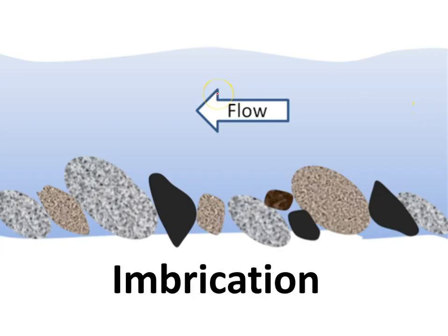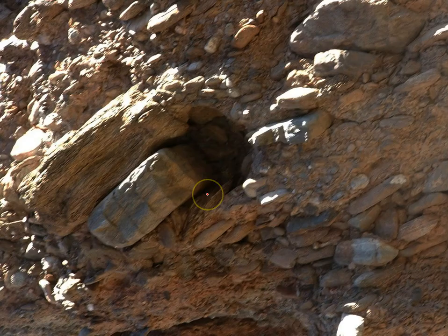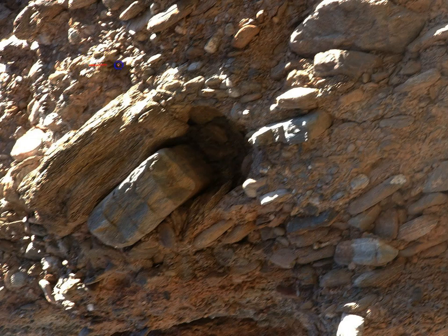Here's another example of a flow indicator. In this case, all of these grains have responded to the directionality of flow by sitting up on their ends like this. This is called imbrication. So this is a rock — can you tell which way water was flowing? You should be able to tell it was this direction right here based on the orientation of the grains.